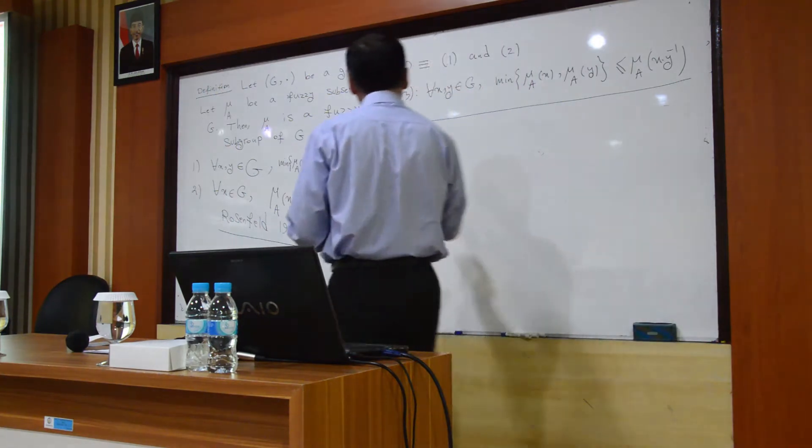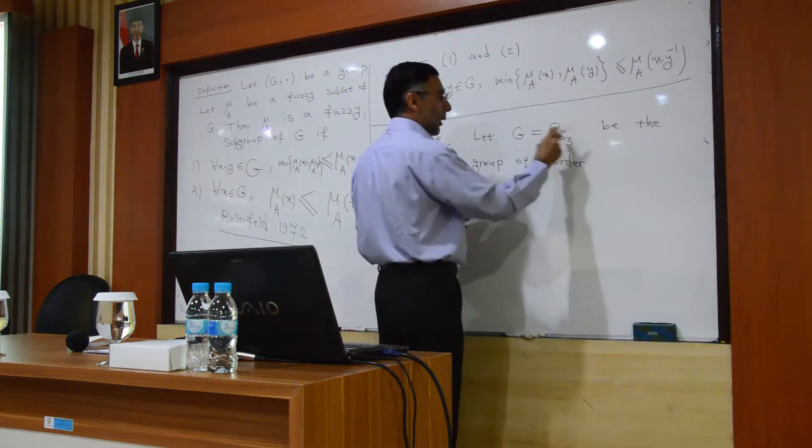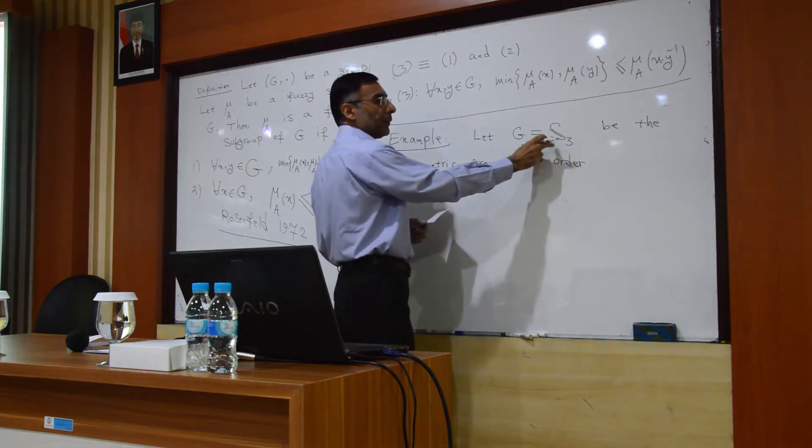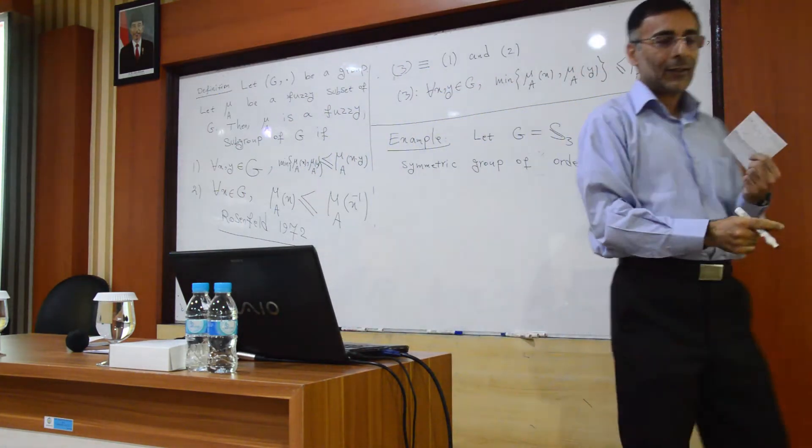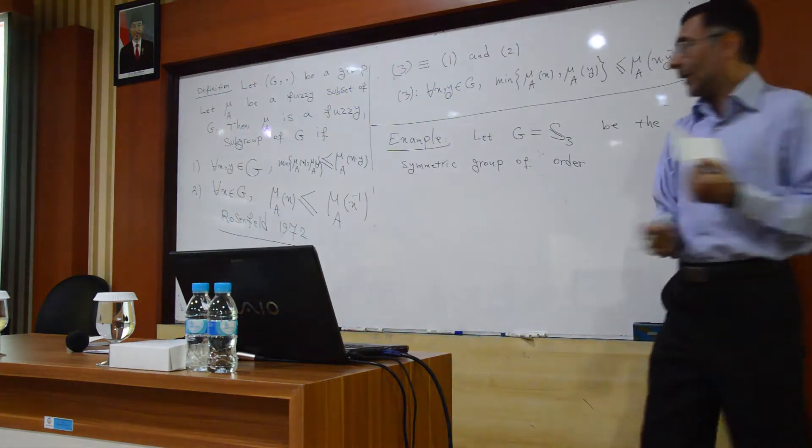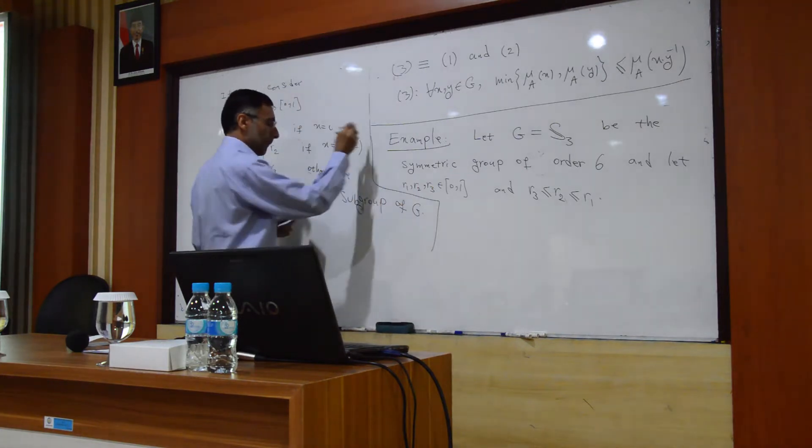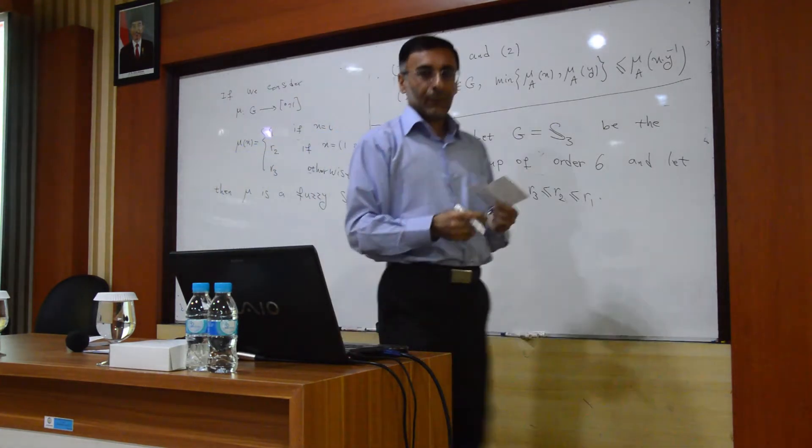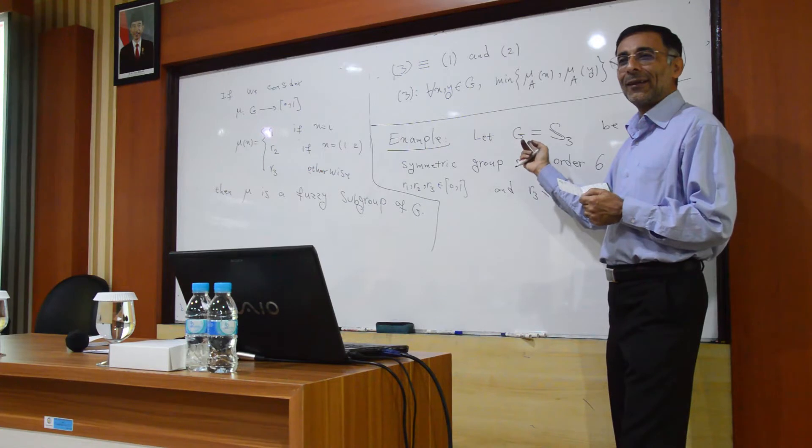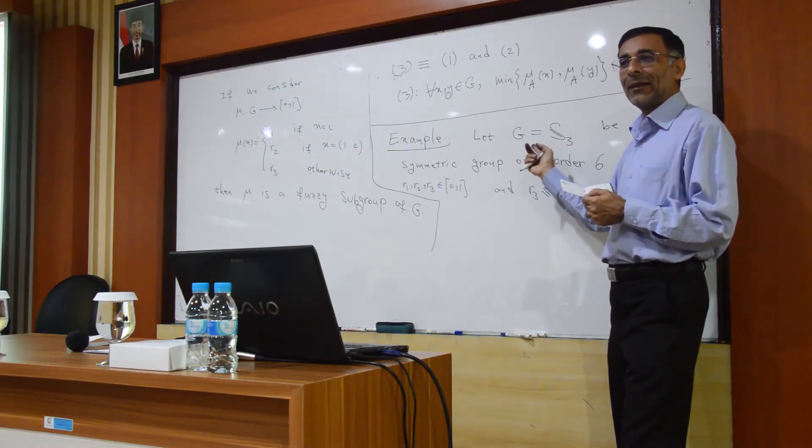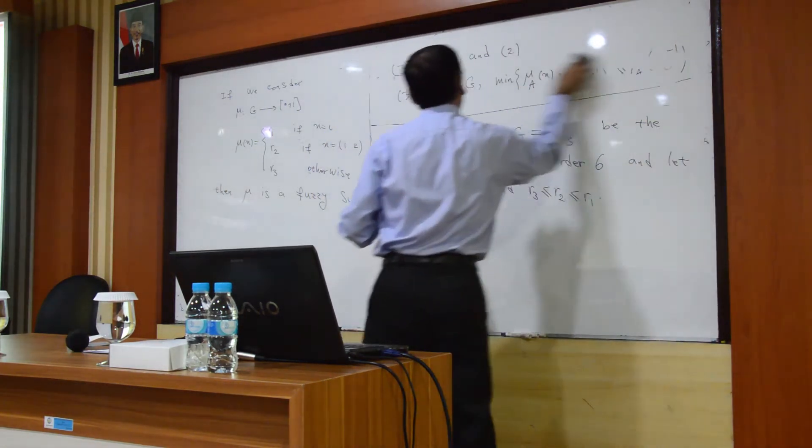For example, now S3, the symmetric group, permutation group. This group, the order of this group, how many elements exist in S3? Six. But, I'm not sure if you know this group or not. If you look at S3, may I explain it here about this set.